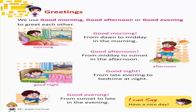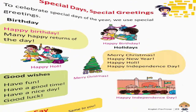Greetings. We use good morning, good afternoon or good evening to greet each other. Morning — Good morning, from dawn to midday. Afternoon — Good afternoon, from midday to sunset. Good night — from late evening to bedtime. Good evening — from sunset to late in the evening. I can say: Have a nice day.